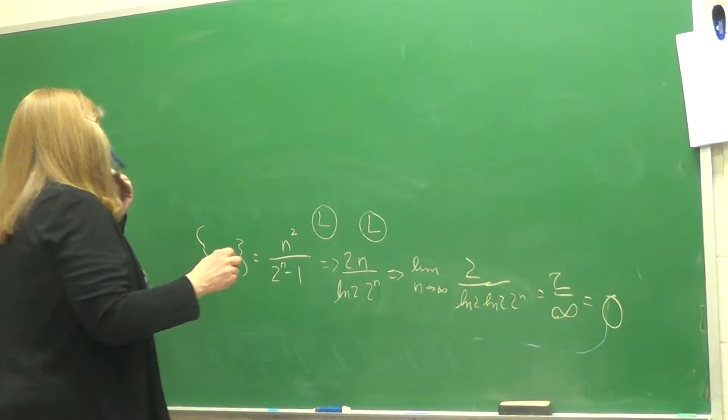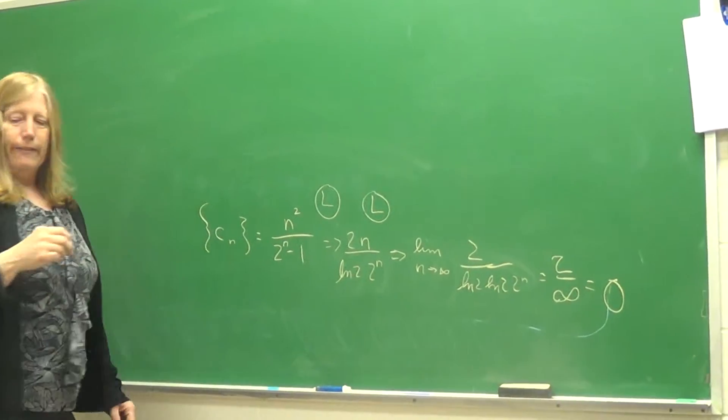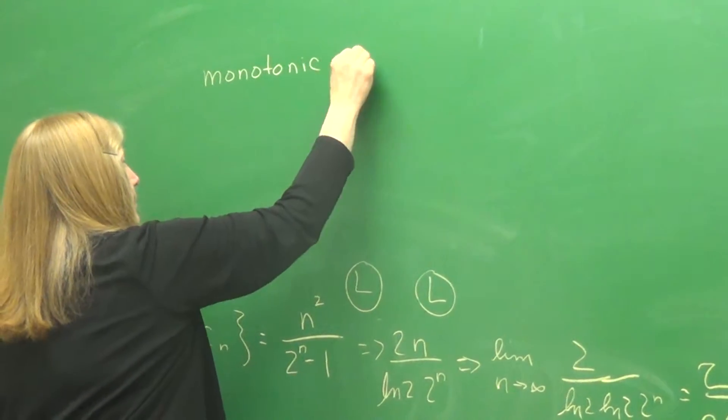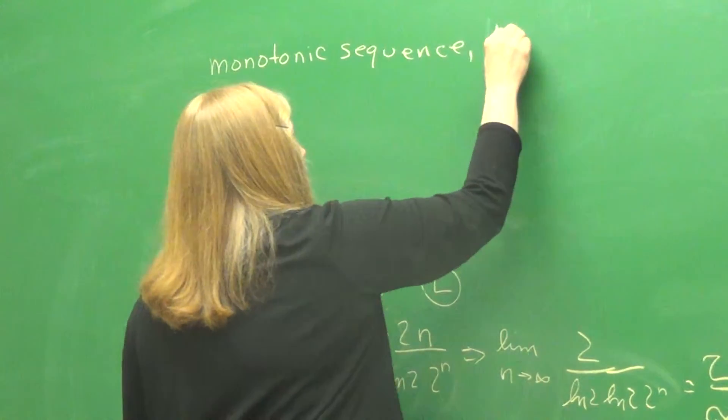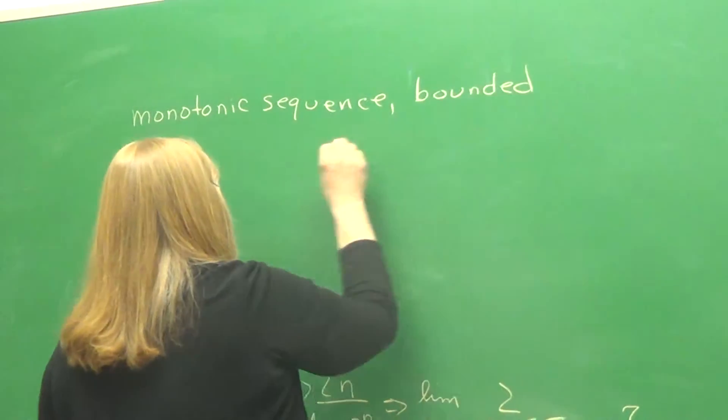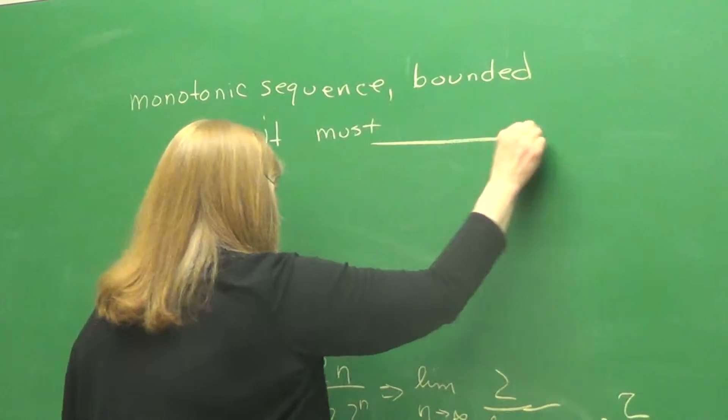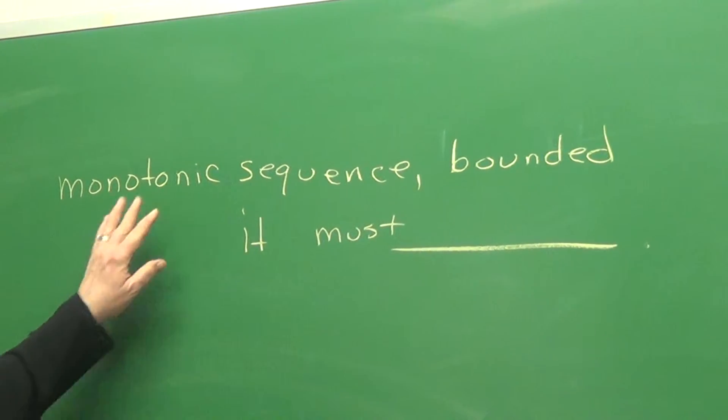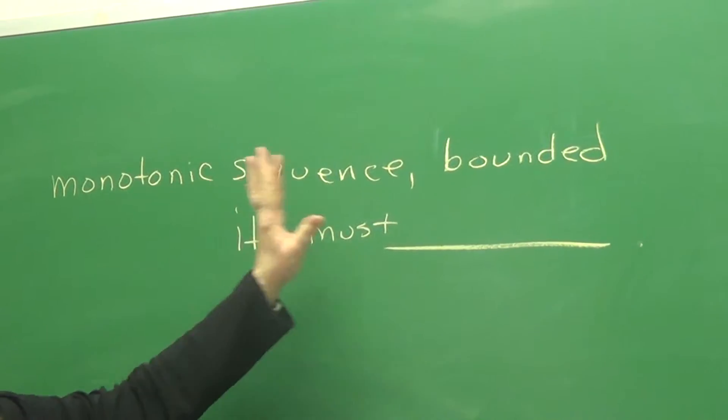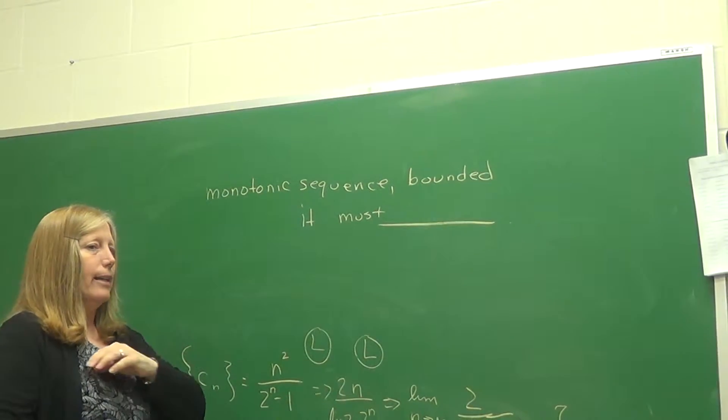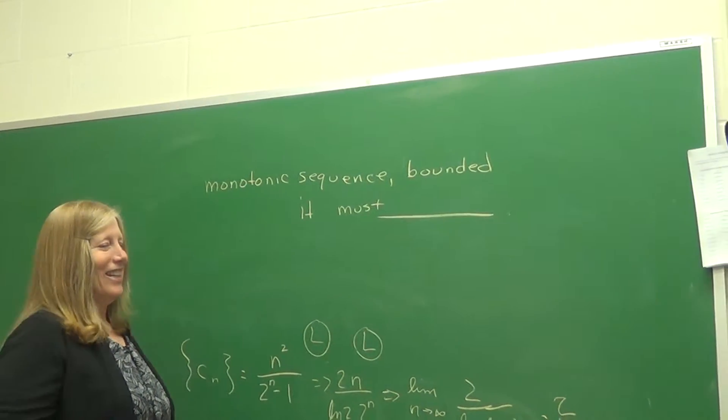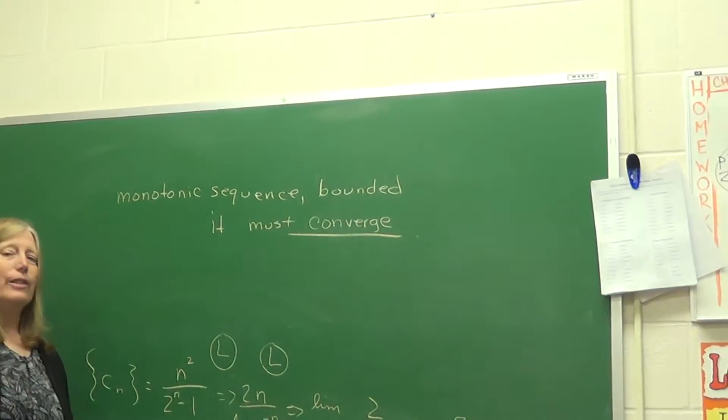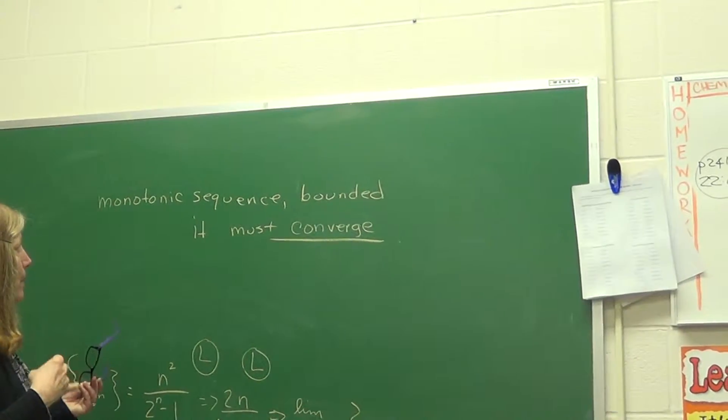We have stated this before, so you don't have to write it down, but you do have to fill in the blank for me. If a sequence is monotonic and bounded, it must do what? That's sort of one of the last things we covered at the end of the week there. If a sequence is monotonic, so we have a monotonic sequence that's bounded, it must, we wrote that out a little better than that before, it must do what? The words converge. Very good. So that should make sense to you without having to look back.